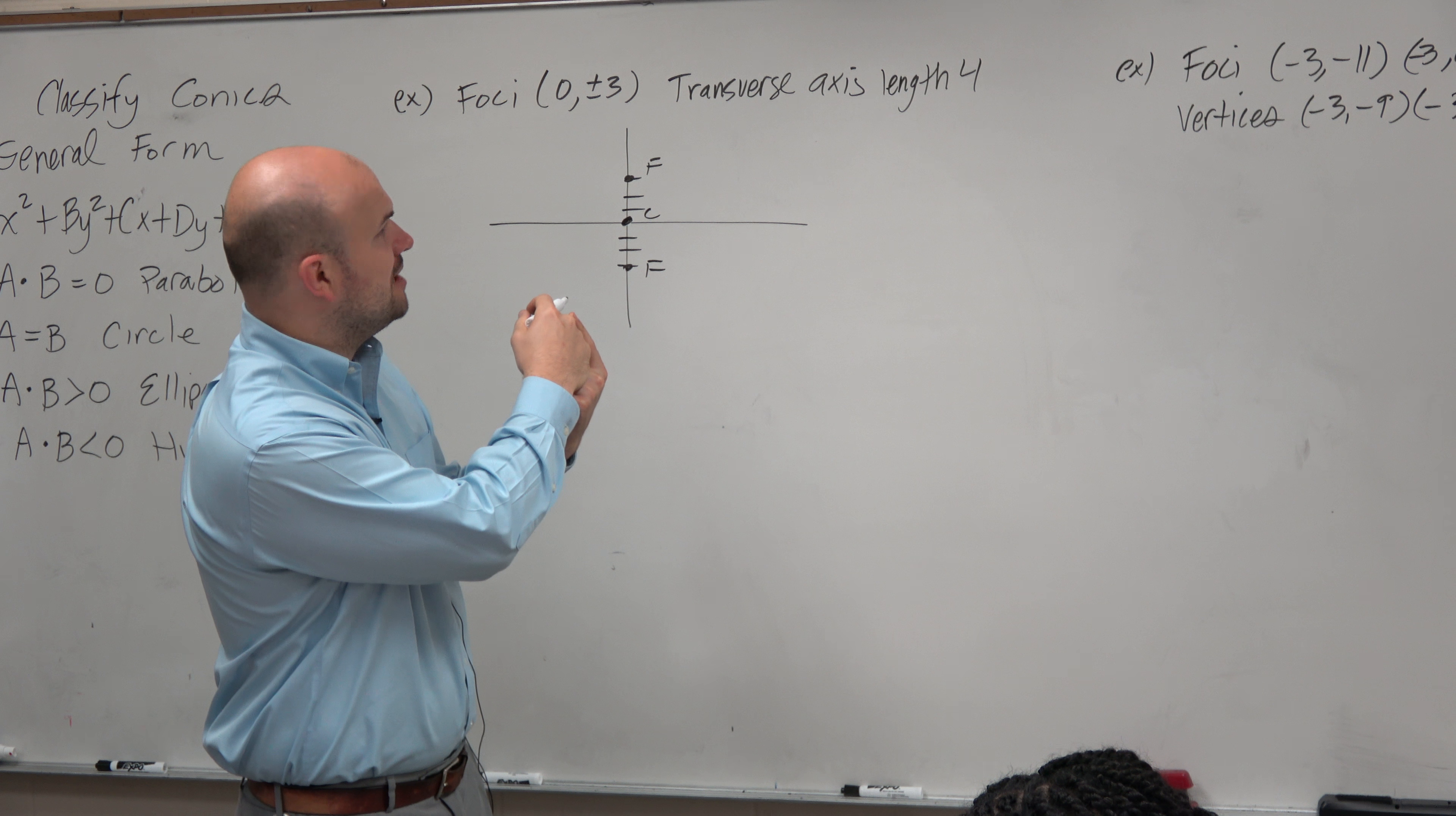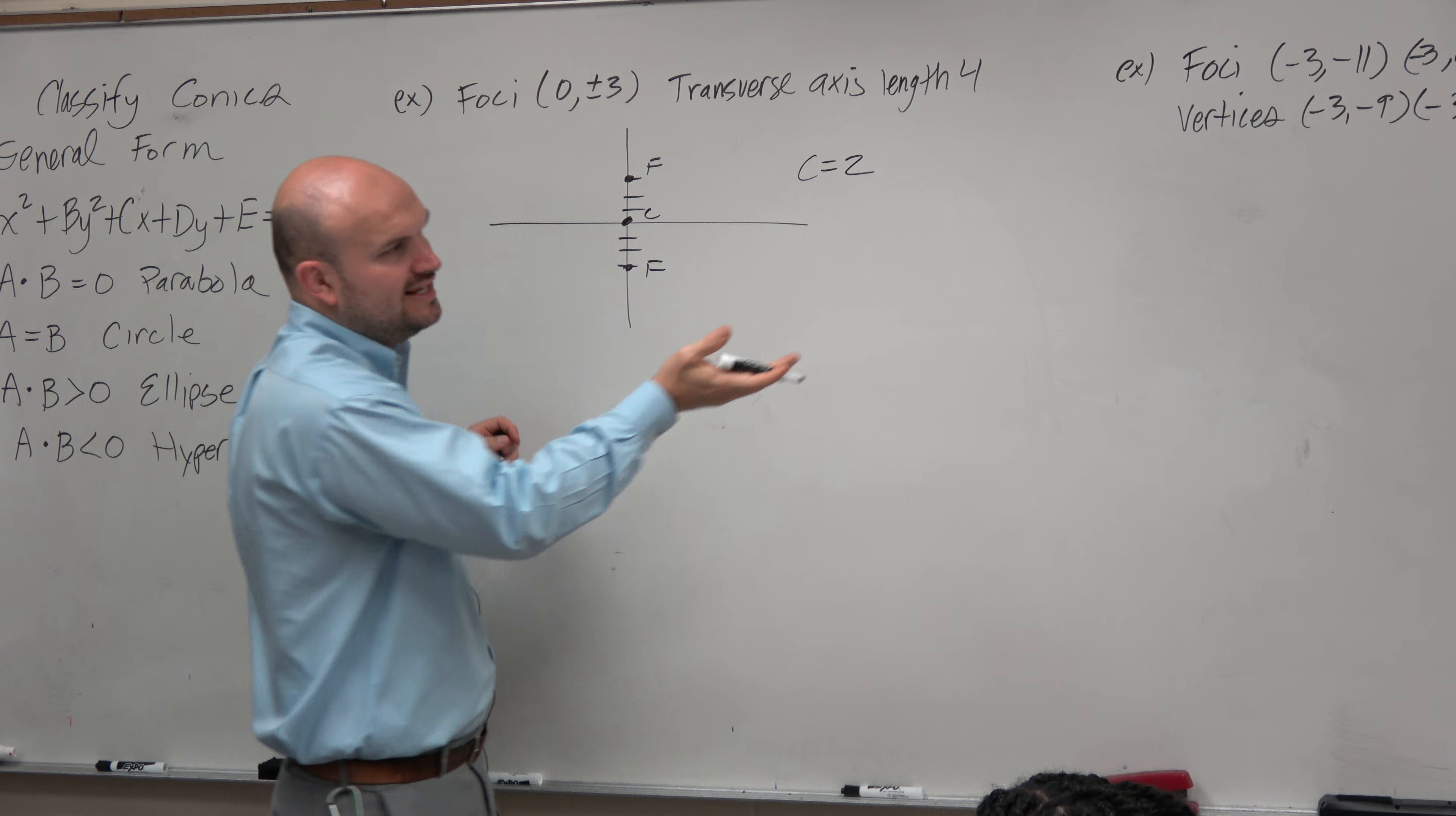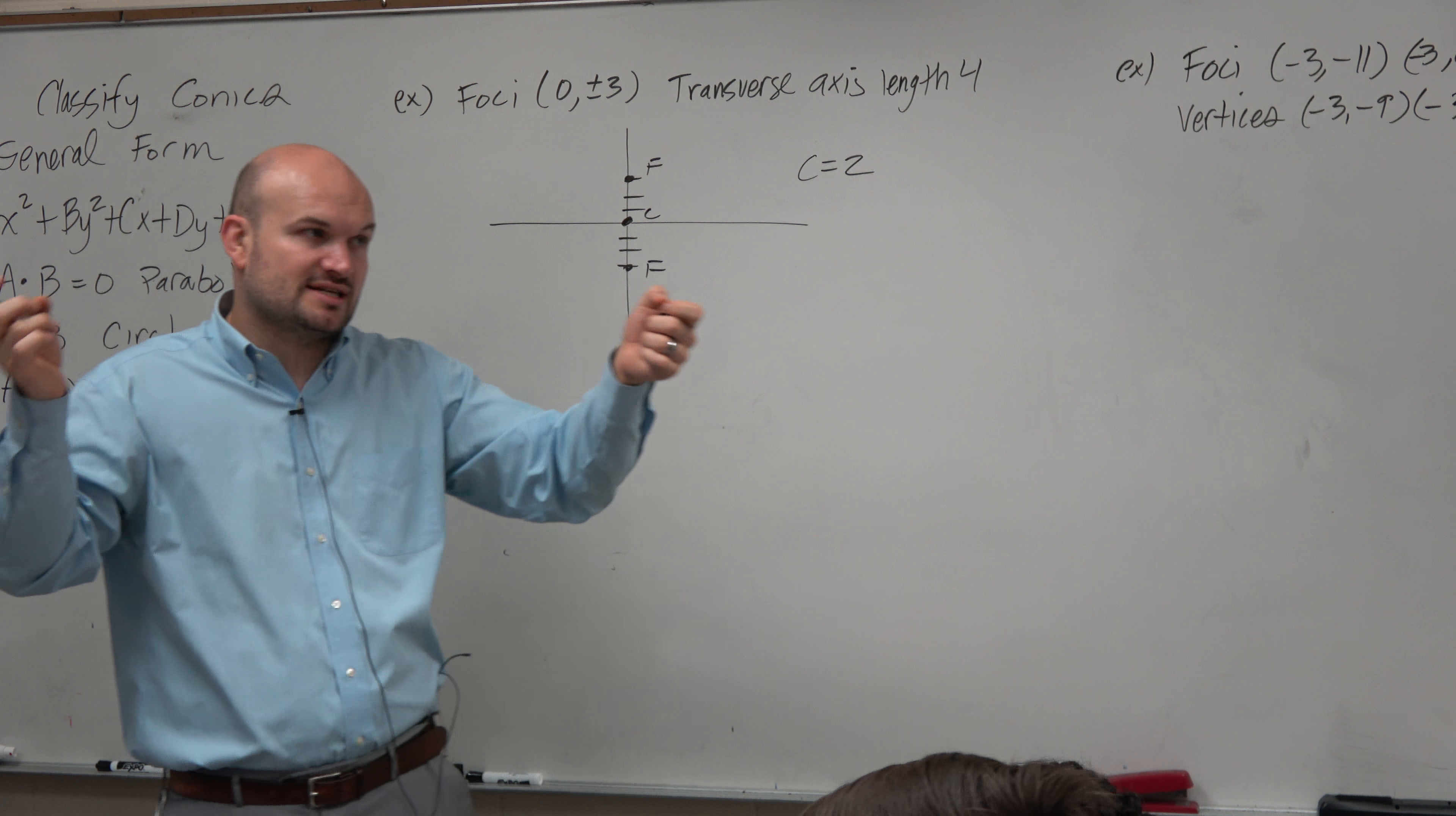And I need to find a and b. Well, foci is giving me c, so that's good. But that's not really going to help me write the equation. I'm not going to insert that into the equation. However, it does say the transverse axis has a length of 4. And the transverse axis is, again, from vertice to vertice, kind of like the major axis was from vertex to vertex.